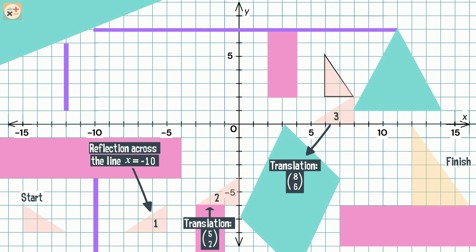For the fourth move, we have rotated the triangle 90 degrees clockwise, around the point 8, 2.